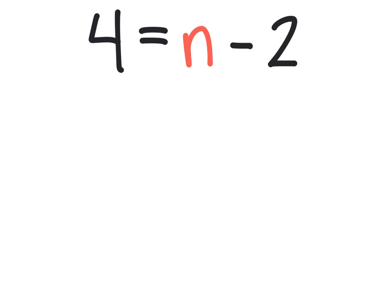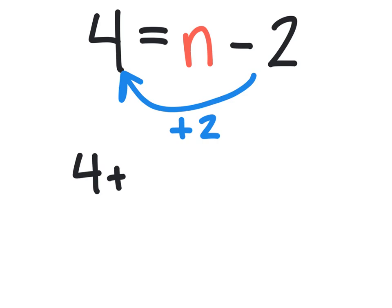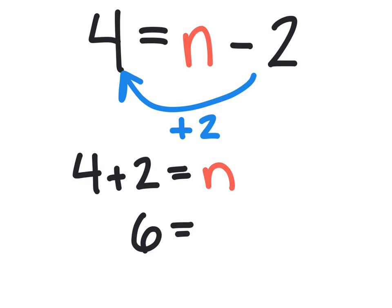In order to do this, I need to move negative 2 to the left-hand side by performing the opposite operation, so I'm going to add 2. Once I do that, I can simplify the left-hand side and say it's 4 plus 2. That is going to equal n. I can further simplify that and say that 6 equals n.